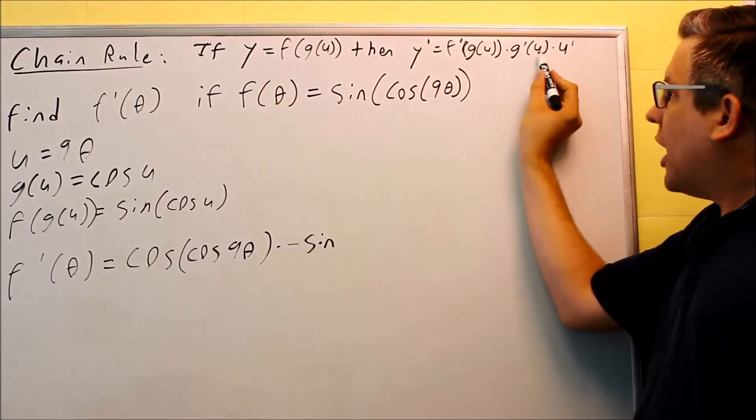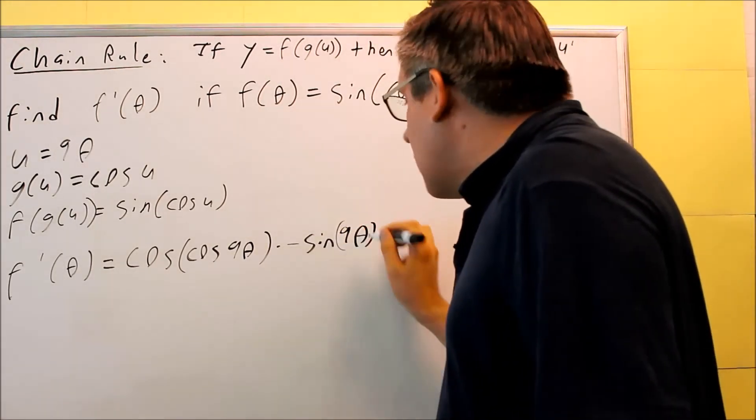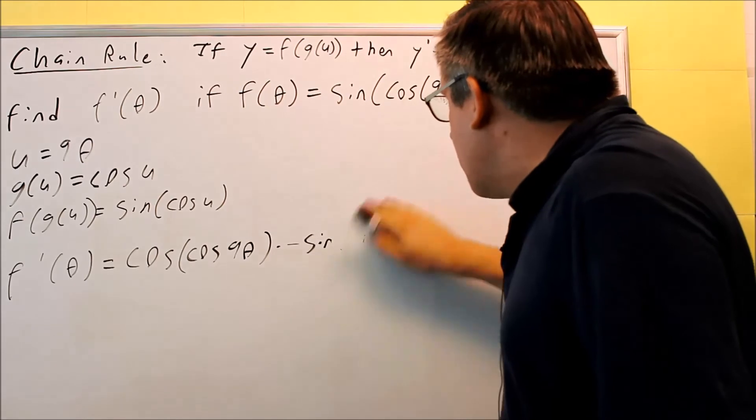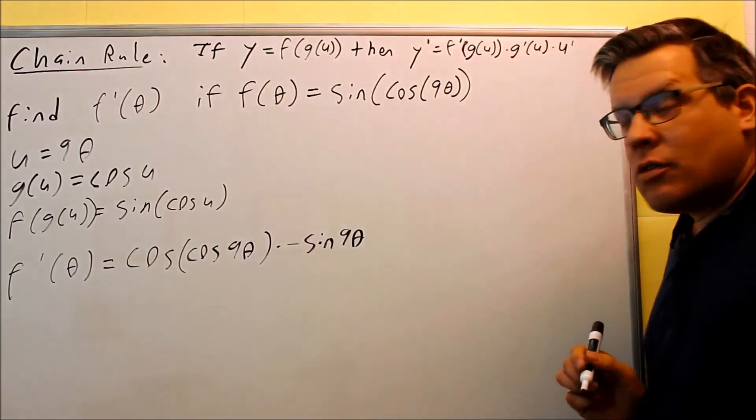But what is it? It's g primed of u. So it's negative sine of 9θ. We can put that back in. Actually, you don't even need the parentheses here, so we can just write it as 9θ.